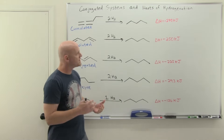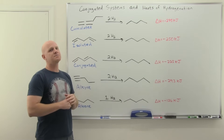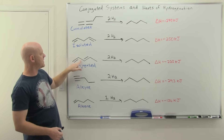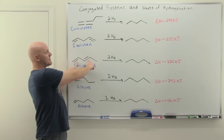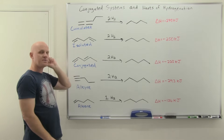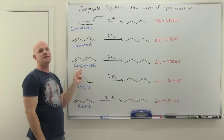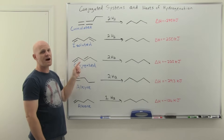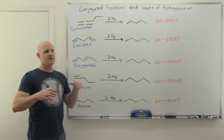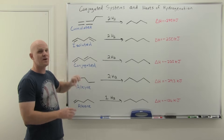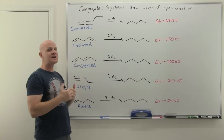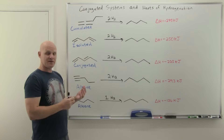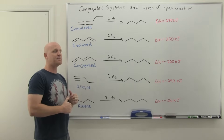Now we're going to see something new. When you have just a single sigma bond between two pi bonds — two alkenes in this case — we call this a conjugated system. It turns out you can't treat these as two separate pi systems. There's an interaction between the two that makes them part of a single larger system of pi electrons.